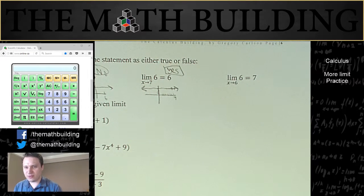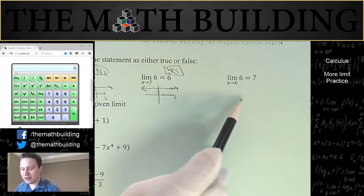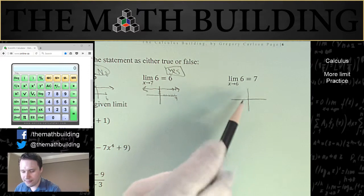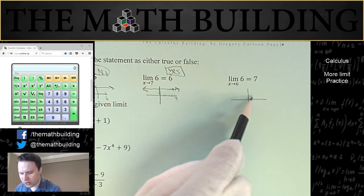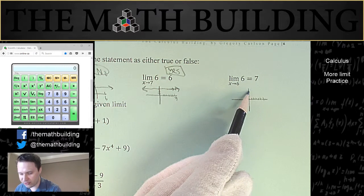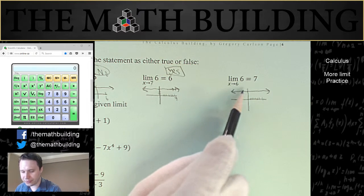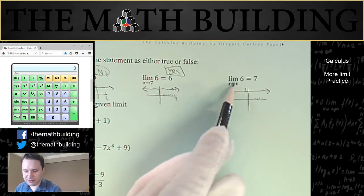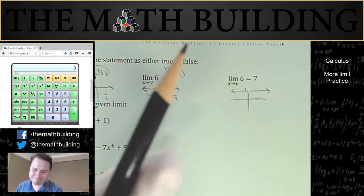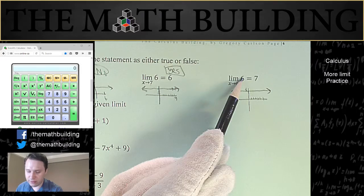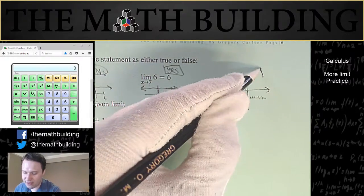What about this last one? The limit as x approaches 6 of 6, is that equal to 7? Well, these numbers match. But again, let's think about it. And you can see how I like to draw pictures, just to help me. So we're approaching 6, and our function is 6, which means our function is 6 everywhere. So can the limit ever equal 7? No. If the function is equal to 6 everywhere, the limit is never going to equal 7.